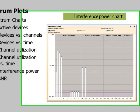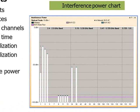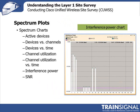The interference power chart is a bar chart similar to the channel utilization charts. A small plus sign indicates the signal strength of the strongest Wi-Fi access point on that channel — you can see one on channel 1 and another on channel 36. The other bar charts show signal strengths from different devices, each color-coded differently. This chart is particularly useful for examining co-channel interference due to neighboring wireless LANs. The last chart on the list is the signal-to-noise ratio bar chart.